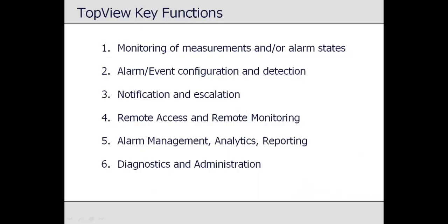Within Top View there are six main categories of features. First is the monitoring of measurements from the underlying system, including PLCs, SCADA systems, control systems, process historians, relational databases, and files.